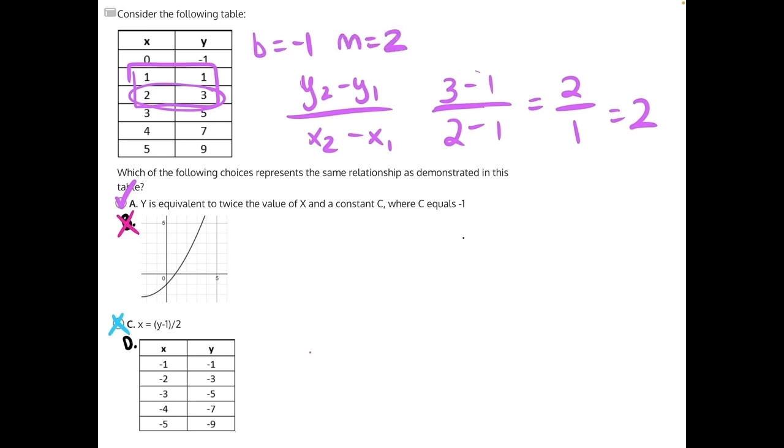And with all that in mind, we can put that into Y equals MX plus B form, Y is equal to 2X minus 1. And now we can take that, put it down here, and start plugging in some numbers from answer choice D. So let's try this first set, negative 1 and negative 1. Negative 1 is equal to 2 times negative 1 minus 1. 2 times negative 1 is negative 2. Minus 1 will give us negative 3, not negative 1. So answer choice D is incorrect, and answer choice A is our correct answer.